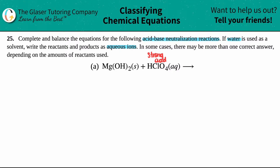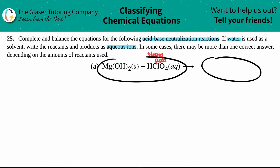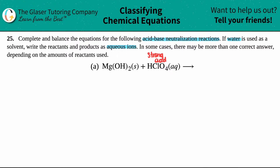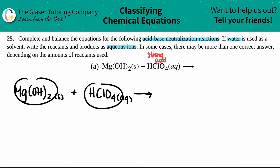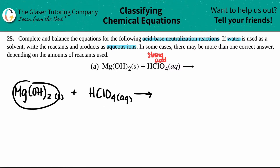So remember, we've done tons of problems like this before. In order to get the products of a reaction, we just need to know what the ions are. So Mg(OH)2, magnesium hydroxide, which was a solid, is reacting with perchloric acid, HClO4. Let's find those ions. We need to know where the split is for these compounds — what ions came together to form magnesium hydroxide?